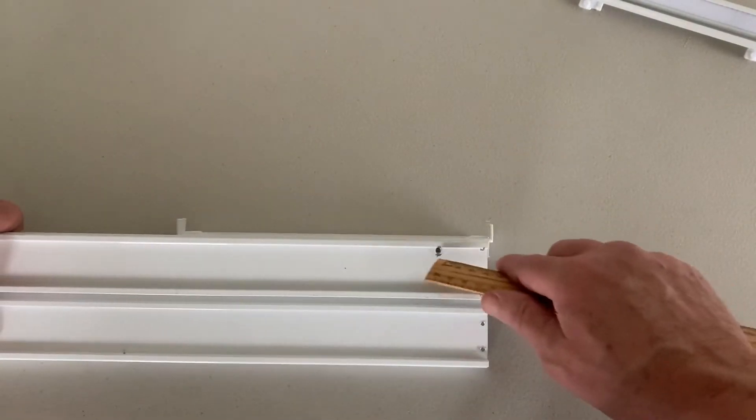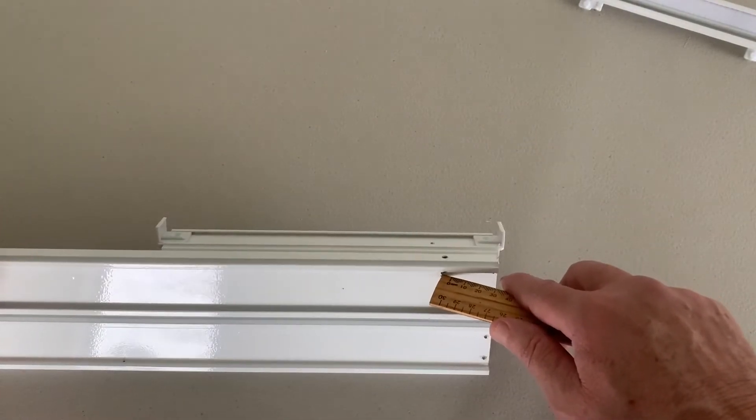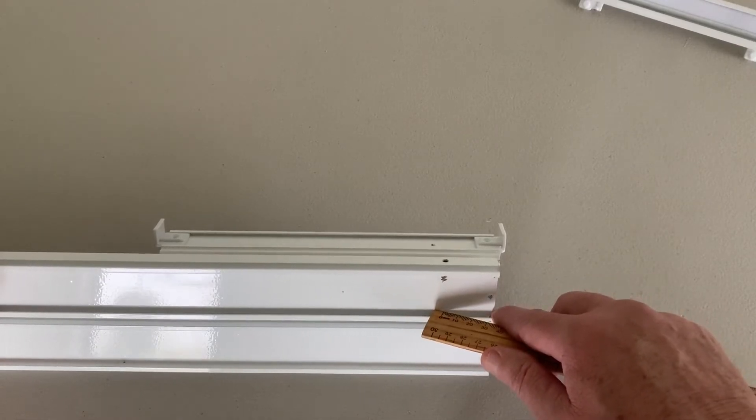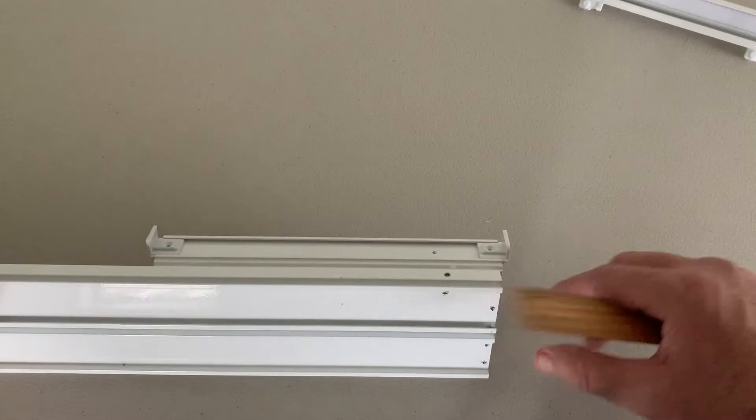You can also put it on the top of the track. So if you're doing F codes or anything like that, you need to do a top of the track. You can put it in the top of the track as well. Again, you'll just measure over that 30 mil.